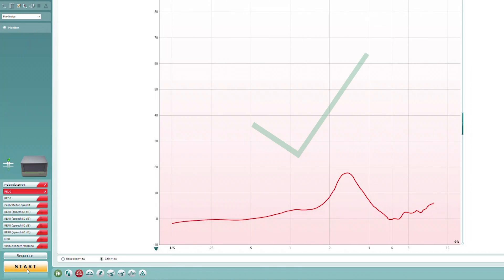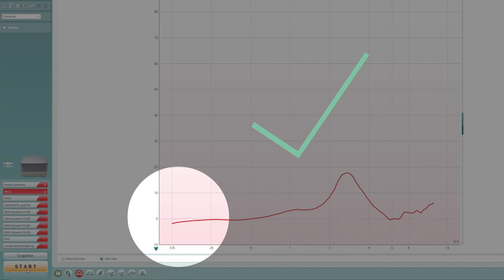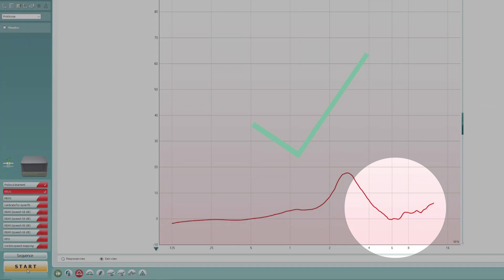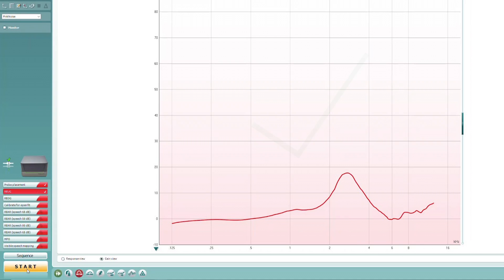A correct probe tube placement will result in an REUG measurement that starts at 0 decibels in the low frequencies, dips down between 4 to 8 kilohertz, and then recovers. The curve should be mostly positive throughout.